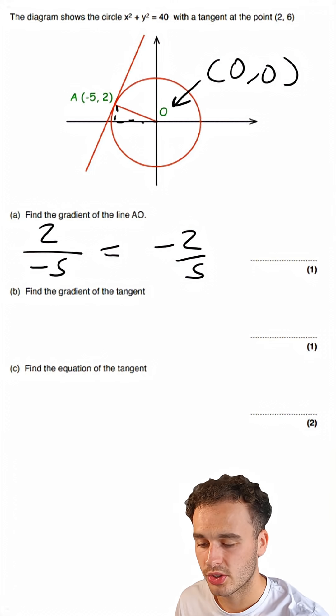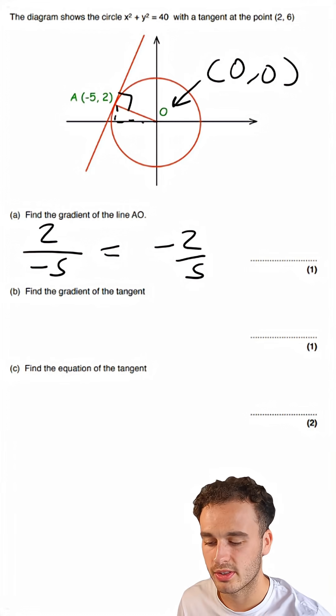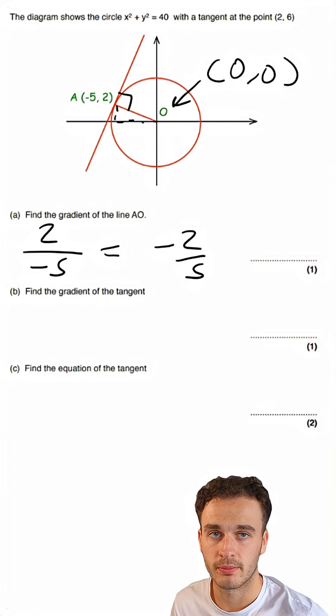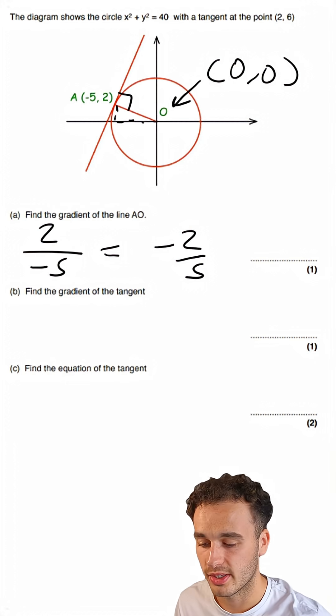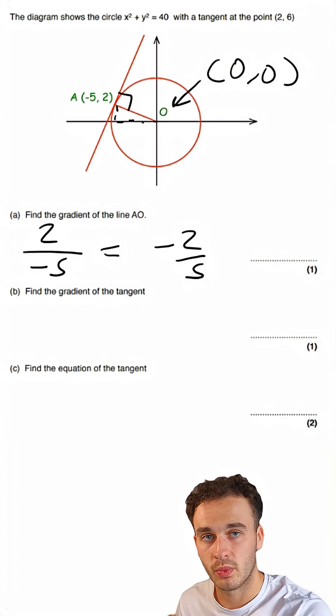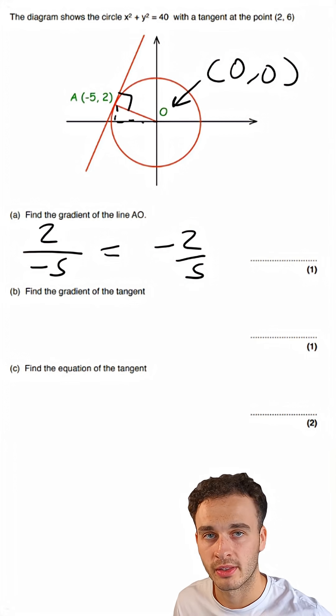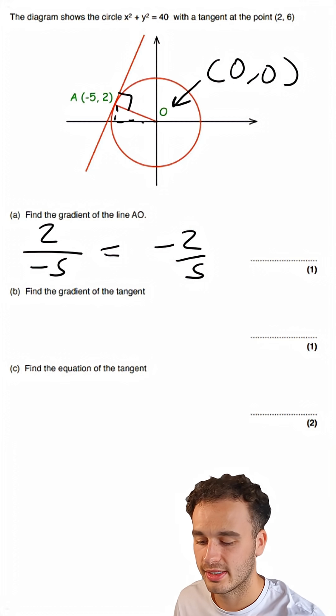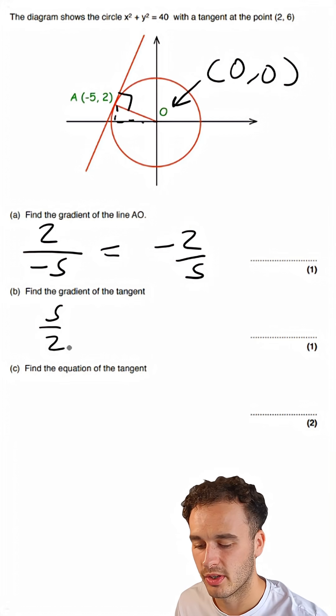To find the gradient of the tangent, part B, you need to understand that where a tangent meets a radius, it is always at 90 degrees. This is a circle theorem. The importance of understanding that these lines meet at 90 degrees is that the gradient of one line will be the negative reciprocal of the gradient of the other. So we know the gradient of AO is minus 2 fifths, we need to take the negative reciprocal of minus 2 fifths, which will just be 5 over 2.